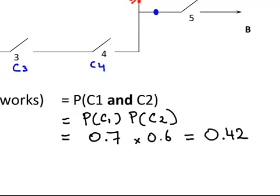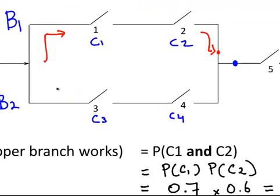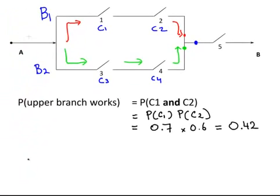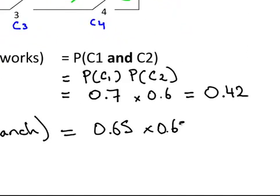Likewise, we can do the same thing for the lower branch, C3 and C4, this way here. What is the probability of going through C3 and C4? We can just do the same thing. The probability of the lower branch is 0.65 times 0.65, and that is equal to 0.4225.